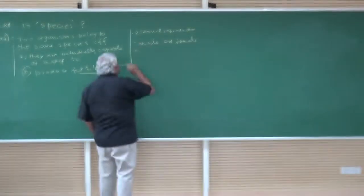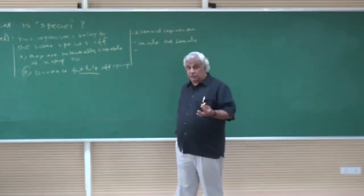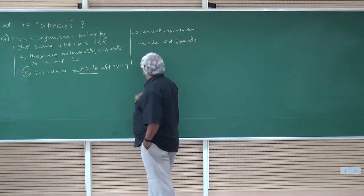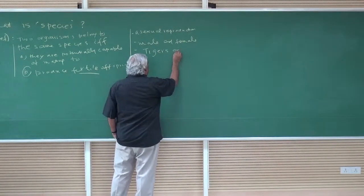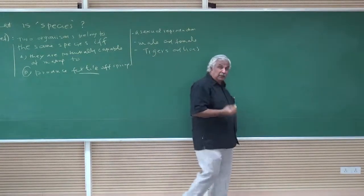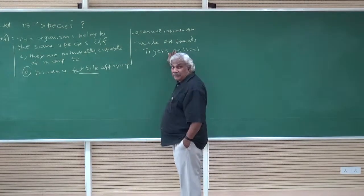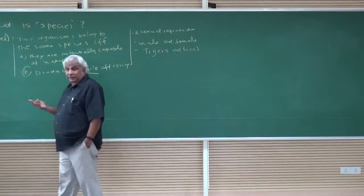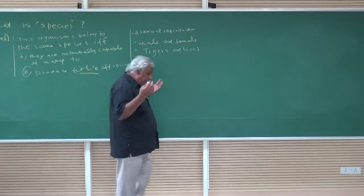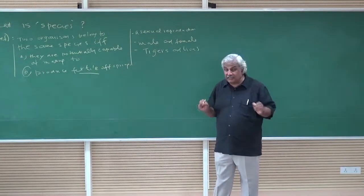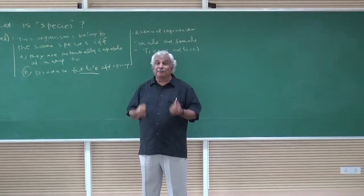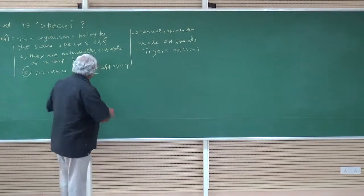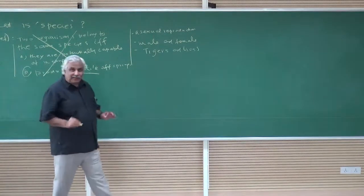The third problem with this definition is there exist cases where we judge two groups to belong to two different species very clearly, and yet they mate and produce fertile offspring. A classic example is tigers and lions. It's well known in the literature that they can mate and produce fertile offspring. So according to this definition, tigers and lions should belong to the same species, and yet we treat them as belonging to two different species. It's also well known that organisms across widely different branches can crossbreed and produce fertile offspring. So this definition just doesn't work.